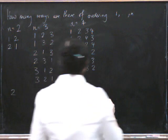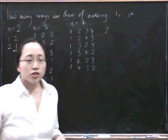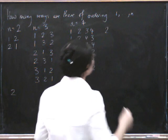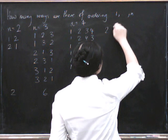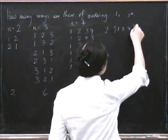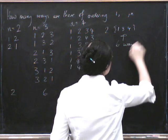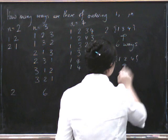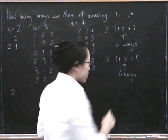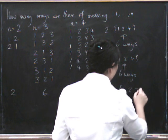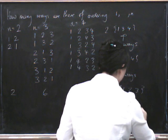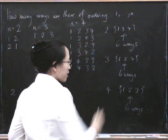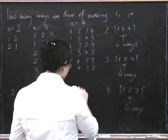Now if we write down all the ways starting with 2, we've got to put the numbers 1, 3 and 4 in the remaining positions, and there are 6 ways of doing that. Similarly, if we start with 3, we've got to put 1, 2 and 4 in some order — 6 ways. And if we start with 4, we've got to put 1, 2 and 3 in some order — 6 ways again. So we've had 6 beginning with 1, 6 beginning with 2, 6 beginning with 3 and 6 beginning with 4. So the answer is 24.